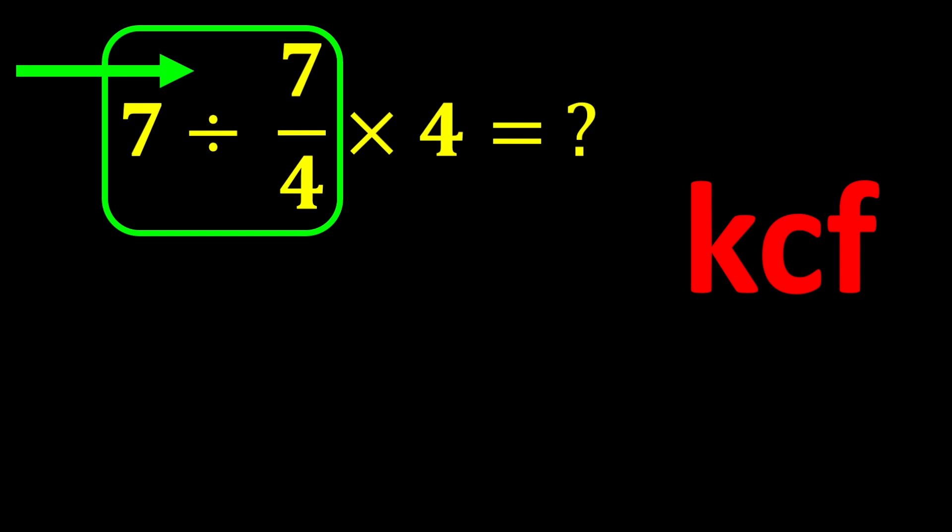K stands for keep, C stands for change, and F stands for flip. The KCF rule is a simple rule for dividing fractions. According to this rule, we keep the first number as it is, change the division sign to multiplication, and flip the second number.